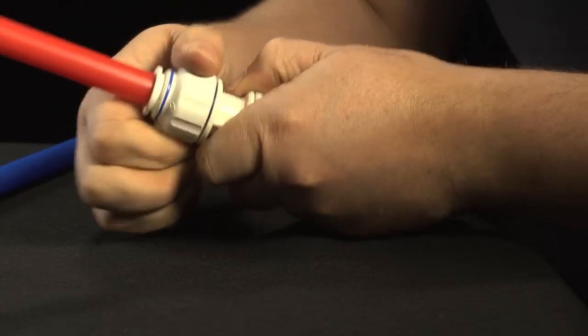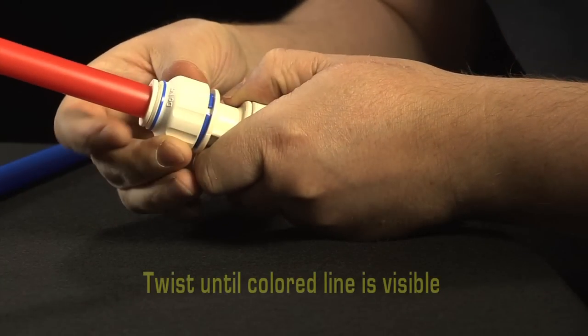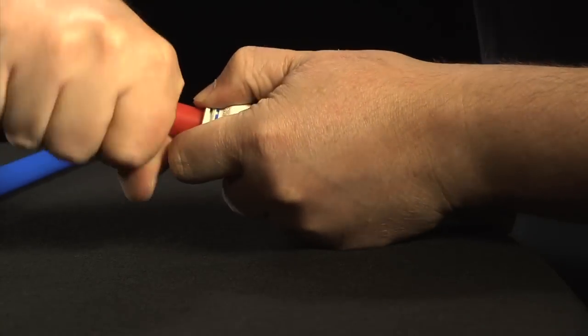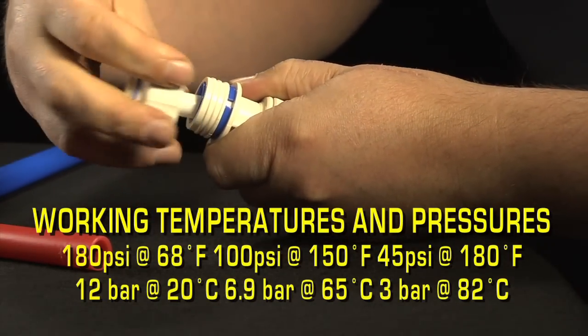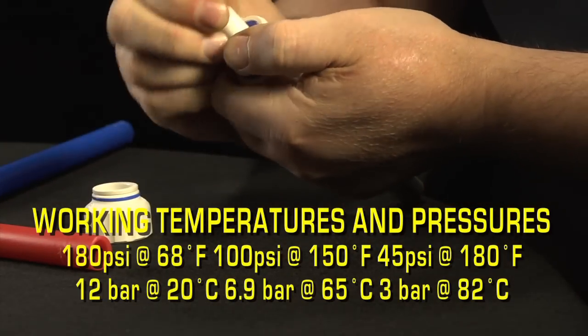To disconnect, unlock fitting by twisting until colored line is visible again. Press collet squarely against the face of the fitting. With the collet depressed, pull tubing to remove from fitting. The fitting may be reused.